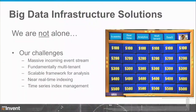Looking at big data infrastructure solutions, we realized we weren't alone. We have a massive incoming event stream from many customers. We're fundamentally multi-tenant — we don't build separate stove-piped systems. We needed a scalable framework for analysis and analytics on logs with near real-time indexing and time series data. We realized we were looking at common big data infrastructure solutions. I'll cover Kafka, Storm, and Elasticsearch briefly for those who aren't familiar, then Philip will get into the details of how we use them in our Gen2 system.